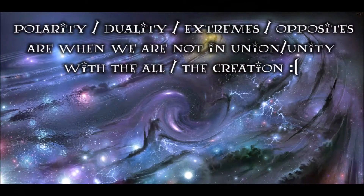So here's the formal definition: Everything is dual. Everything has poles. Everything has its pair of opposites. Like and unlike are the same. Opposites are identical in nature but different in degree. Extremes meet. All truths are but half-truths. All paradoxes may be reconciled. The key part for me is basically summed up in that opposites are identical in nature but different in degree — that middle part of the whole definition is very important to evaluate.